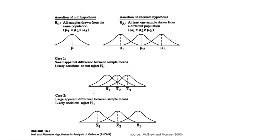A way to visualize the different hypotheses: our null hypothesis in the analysis of variance assumes that all samples are drawn from the same population, or that mu sub one equals mu two equals mu three. Our alternative hypothesis says that at least one of the means differs, meaning mu one, mu two, and mu three are not all equal. The alternative hypothesis is that at least one of them is drawn from a different population.